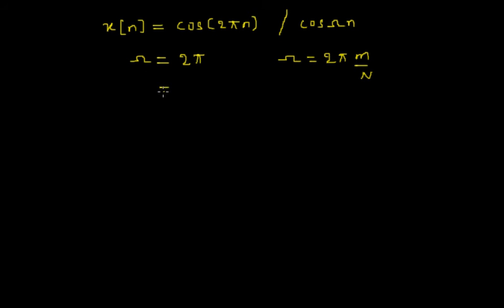So let's see it. 2π we already have, to get m divided by N, I will write it as 1 divided by 1. Therefore, the given signal is periodic in nature, as I can express its angular frequency as a rational multiple of 2π.